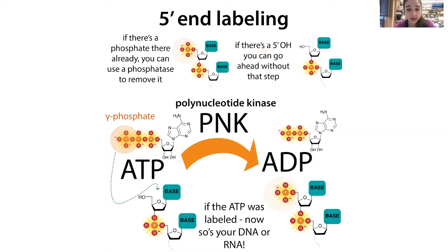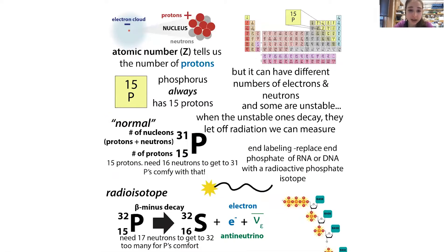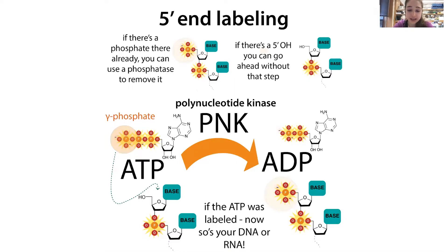P32 is really useful for labeling RNA or DNA because phosphorus is found throughout the backbone of these molecules. When it comes to actually labeling DNA or RNA, we have some options. What I typically do is five-prime radio labeling — labeling the five-prime end — and it turns out this is often very simple, very useful, and very helpful.